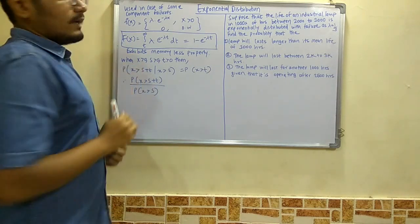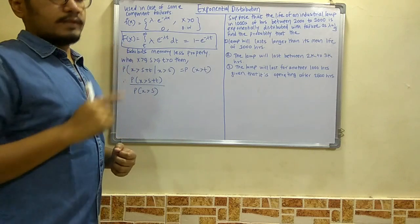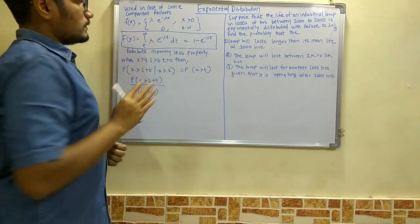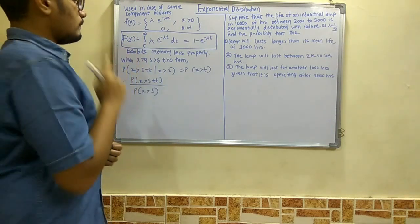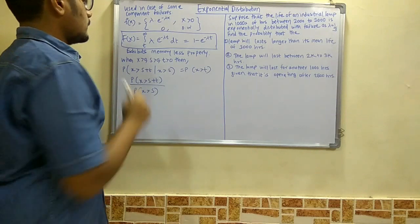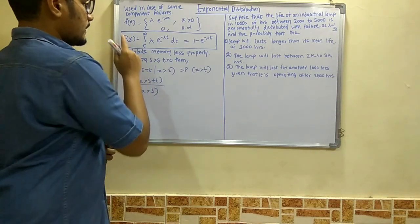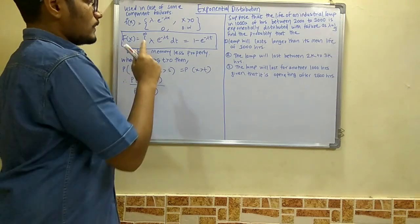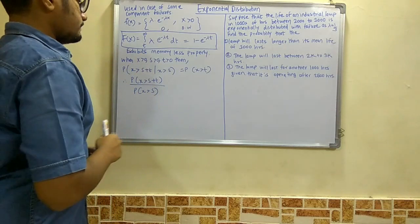We have the PDF: f(x) = λ·e^(−λx) for x greater than 0, and 0 otherwise. Next, we have the main formula for solving the problem — the CDF, capital F(x), which is the integral from t to infinity of e^(−λt) dt, and this evaluates to 1 minus e^(−λt).